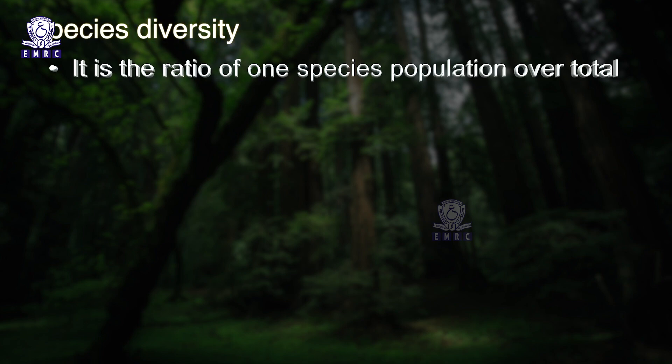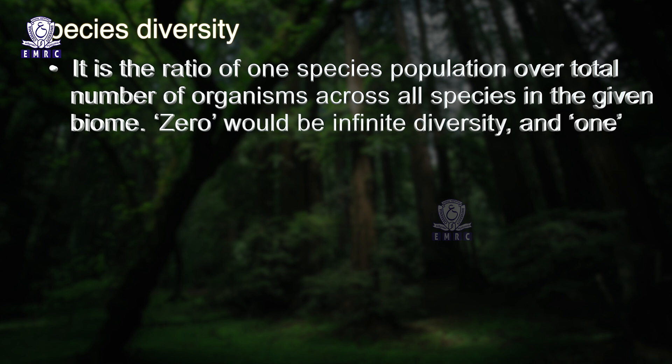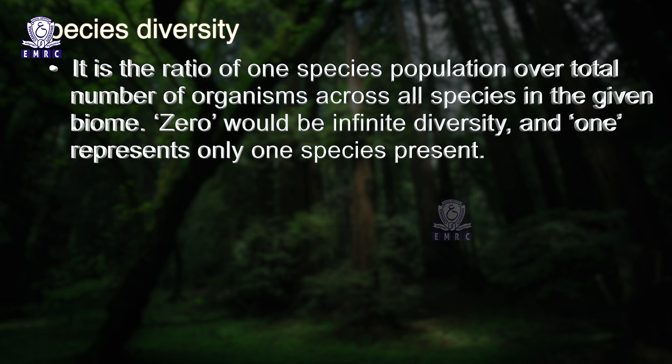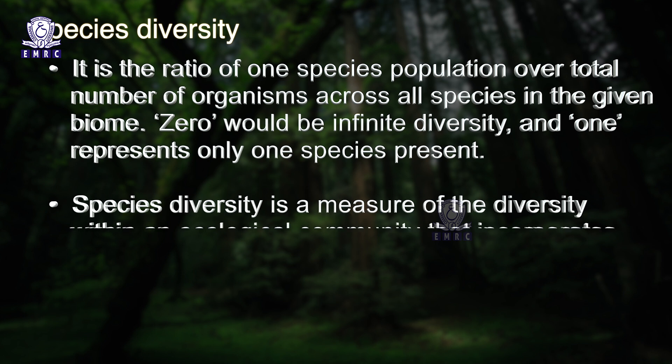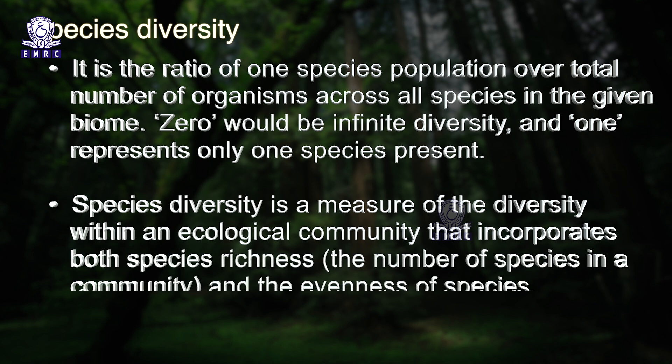Species diversity is a ratio of one species population over the total number of organisms across all species in the given biome. Zero would represent infinite diversity and one represents only one species present. Species diversity incorporates both species richness and the evenness of species. In general, species diversity decreases as we move away from the equator towards the poles. The tropics — the latitudinal range of 23.5° north to 23.5° south — harbor more species than temperate or polar areas.